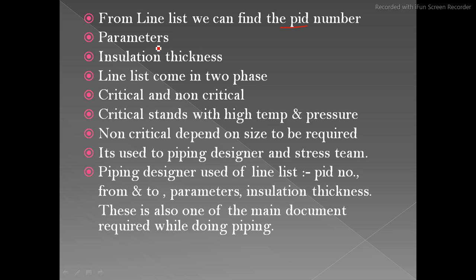We can also get parameters like pressure, temperature, and insulation thickness from the line list. The line list comes in two phases: critical and non-critical. Critical refers to high temperature and pressure, or it refers to line size above 10 or 12 inch. Non-critical depends on the size required, and it depends upon the client's requirements.